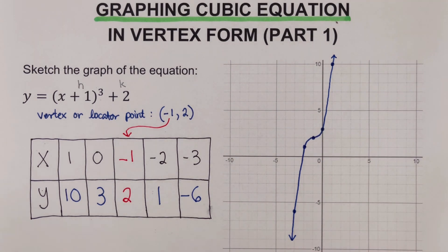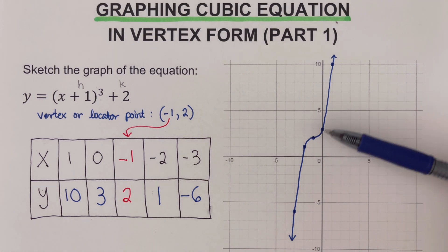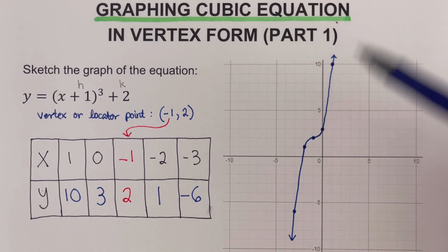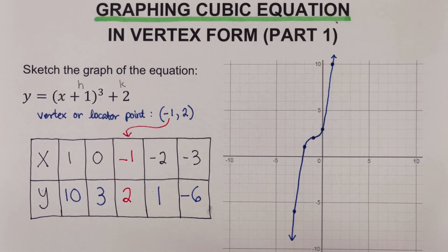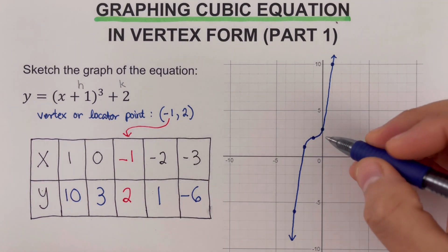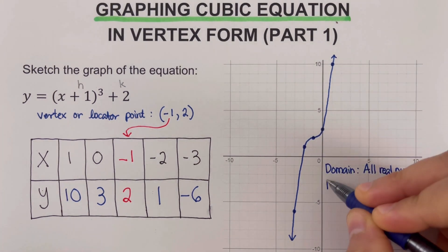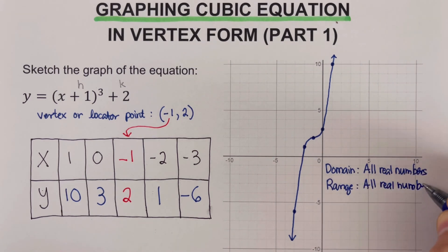This tells us that the domain for this equation is all real numbers. Likewise, the range also goes up to infinity and down to infinity, so the range is all real numbers as well. Let's move on to the next example.